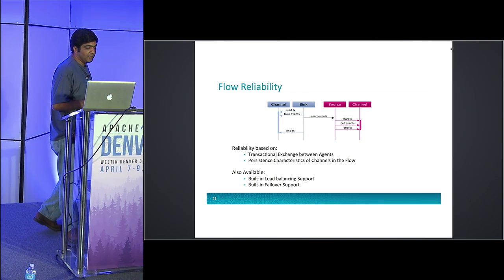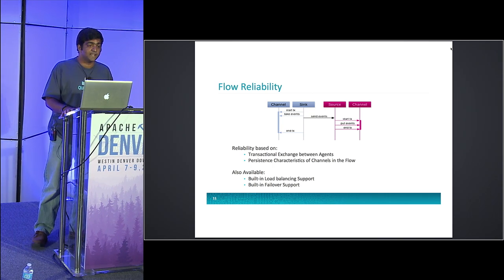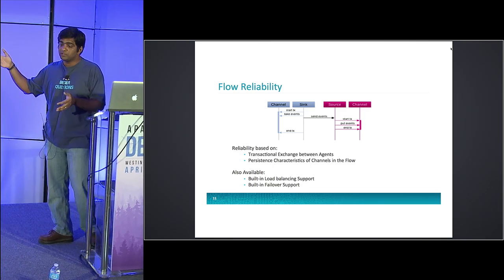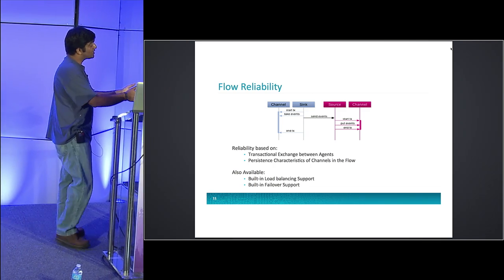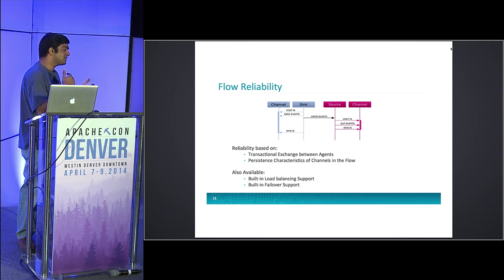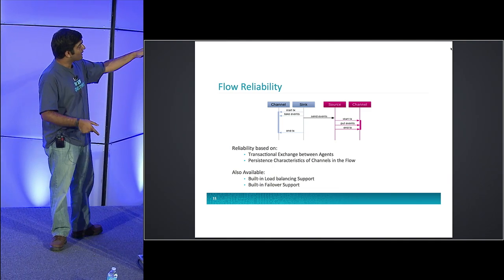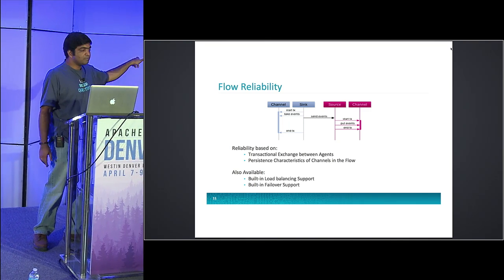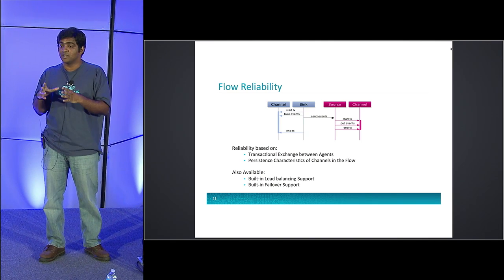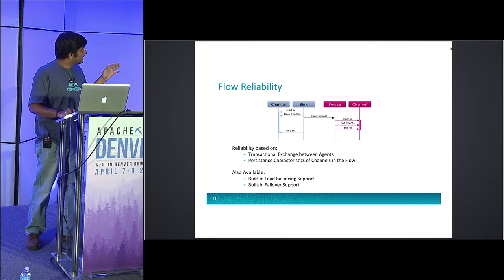How do we ensure flow reliability? Each sink opens a transaction with its own channel, reads a bunch of events, and sends them to the source on the next tier. When the source receives the events, it opens its own transaction with its own channel, writes it out, and commits. Only at that point does the source respond to the sink saying the data was successfully written. If the sink times out or gets an error, it simply rolls back the transaction with its own channel. When the sink rolls back, the channel puts the events back into the buffer — uncommitted transaction events are never lost, just put back into the channel and made available again. This is how we guarantee reliability.